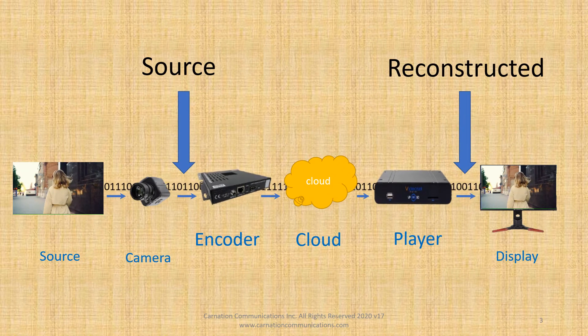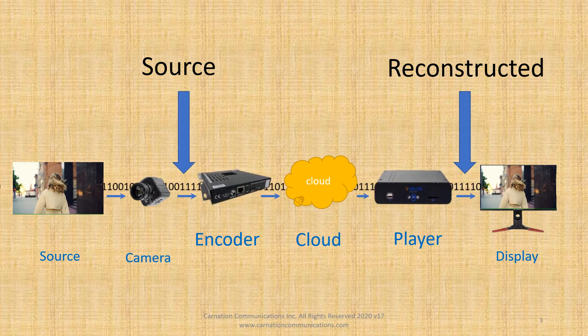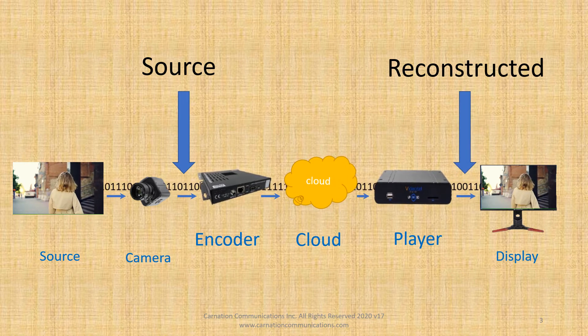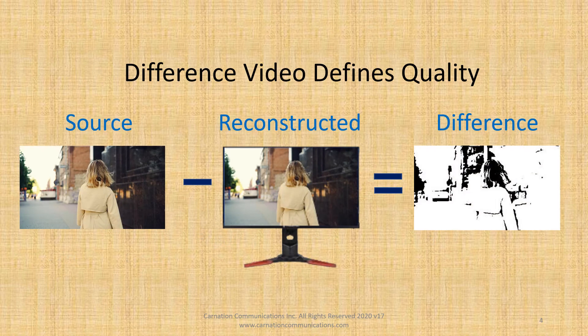How do we capture this distortion? We have the source, which is typically tapped between the camera and the encoder, and then we have the reconstructive stream, which is tapped between the player and the display. Taking the two and subtracting the source from the reconstructive, we get the difference. It is from this difference that we extract the PSNR.